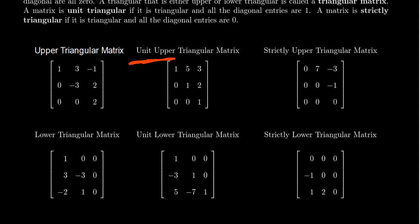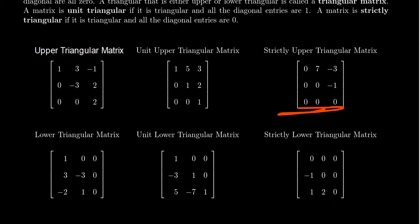Unit upper triangular matrices are not going to be closed under scalar multiplication or addition, because if you add or scale these things you're going to change the ones along the diagonal. But they do have the property that they're closed under multiplication — a unit upper triangular times a unit upper triangular is unit upper triangular. Same thing can be said for unit lower triangular matrices. The strictly upper triangular matrices, much like the upper triangular matrices, will be closed under addition, scaling, and multiplication. Same thing can be said for strictly lower triangular matrices as well.